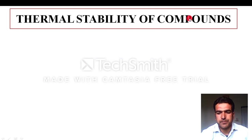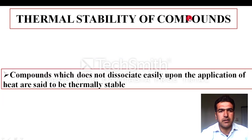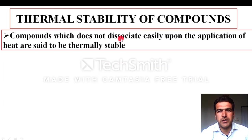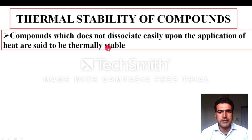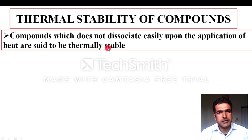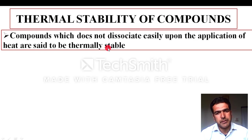Thermal stability of compounds. What do we mean by thermal stability? Compounds which do not dissociate easily upon the application of heat are said to be thermally stable. These compounds, when we apply heat, are not decomposed — they have more thermal stability, meaning they require more heat to decompose. Note that thermal stability and melting are two different parameters; melting is not the same as decomposition.